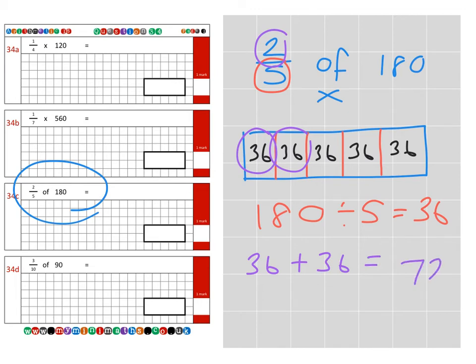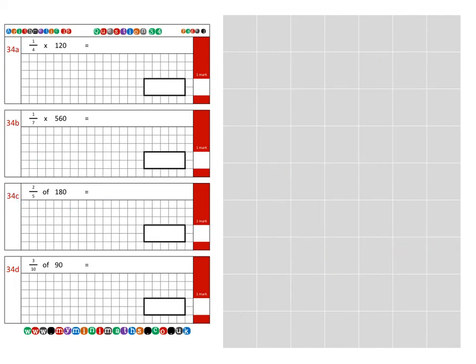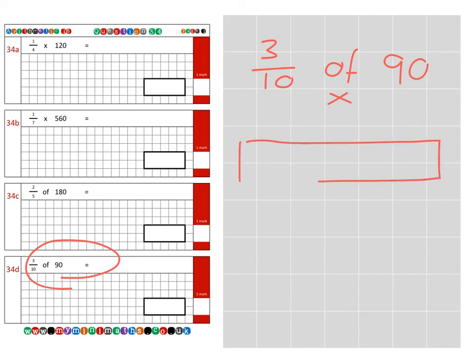And finally on to question 34d, which is going to be calculating three tenths of 90 or multiply by 90. So if we take our box to represent 90 and then we break that up into 10 equal parts.